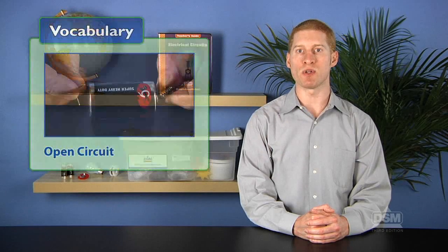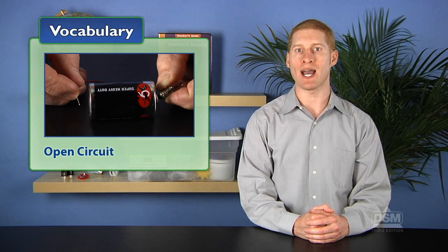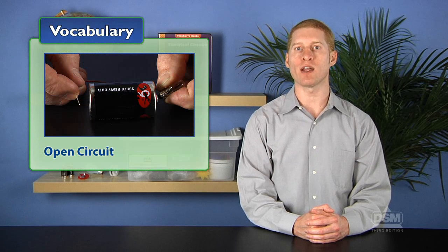Then introduce the term open circuit as a circuit in which the path is not connected and the current can't flow from one end of the battery to the other. Reinforce that in an open circuit, the bulb does not glow.